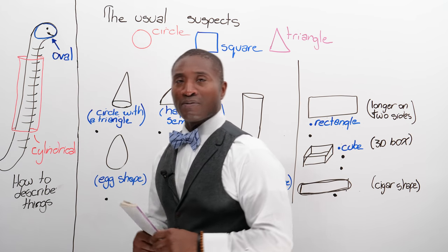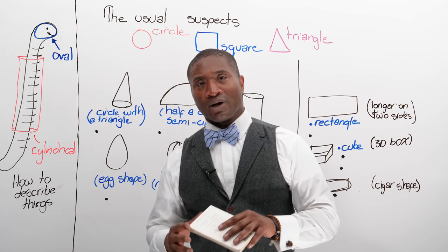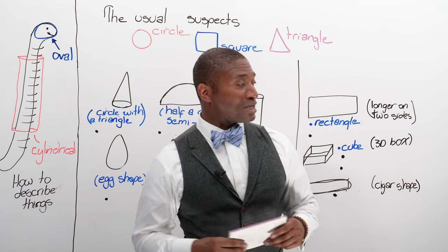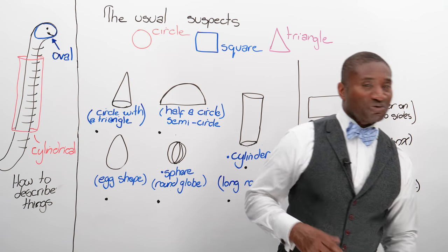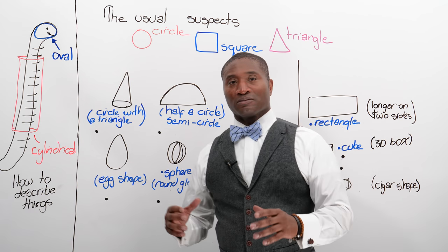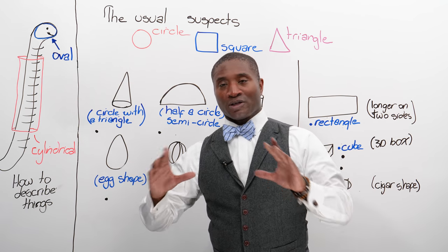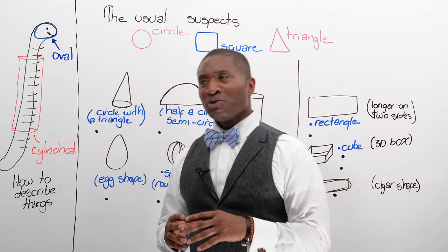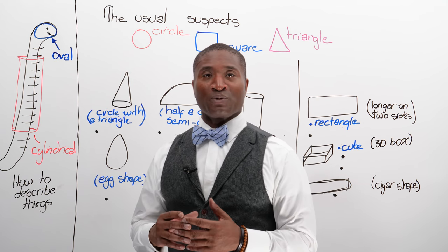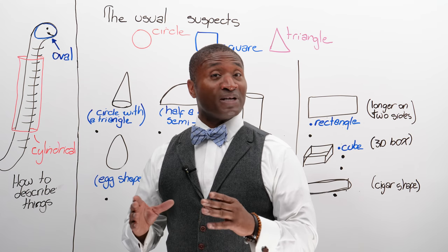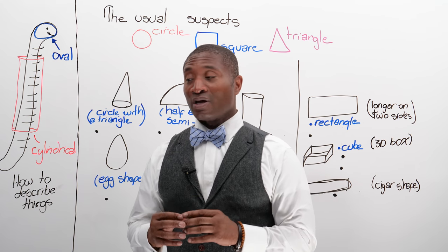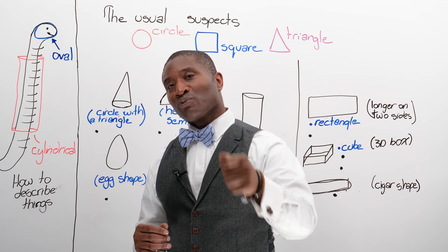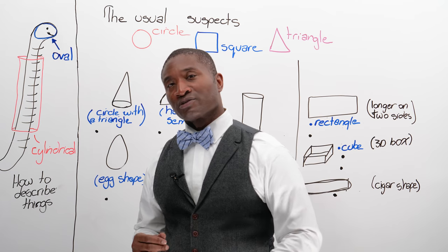A lot of times in English we use shapes to describe things. For most students, they have the classic shapes — square, circle, and triangle — and today I'm going to teach you a few other shapes that we use, which are sometimes a combination of shapes that we can use to accurately describe real-world things.